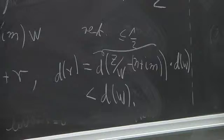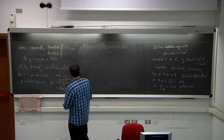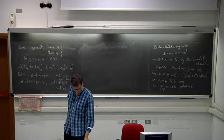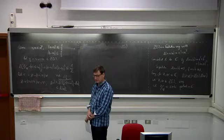One of the things Euclidean rings are is principal ideal domains — every ideal is principal, meaning every ideal is generated by just one element. For instance, every ideal in Z is just the multiples of one integer.